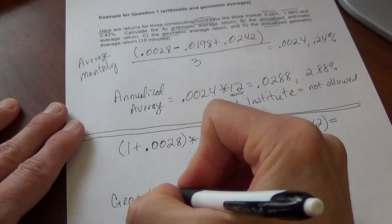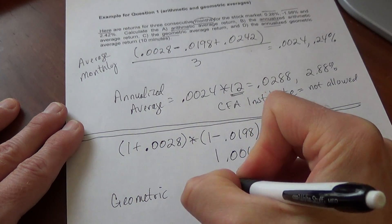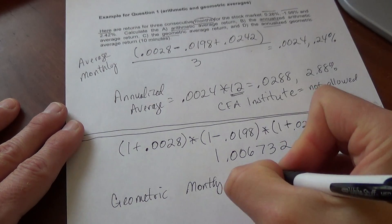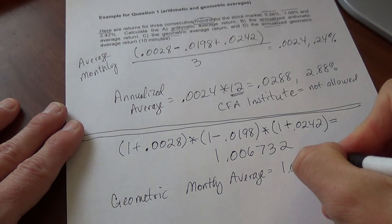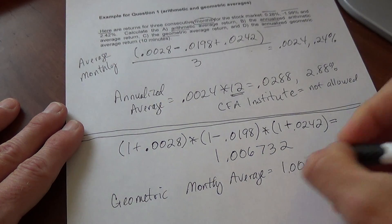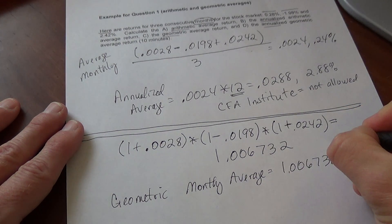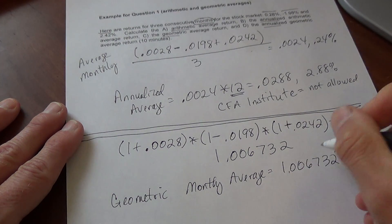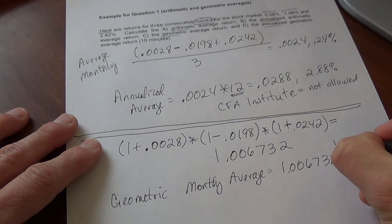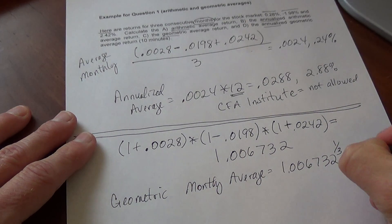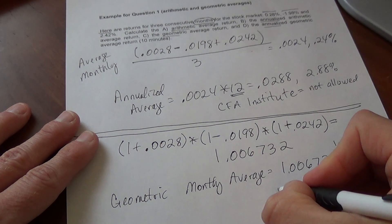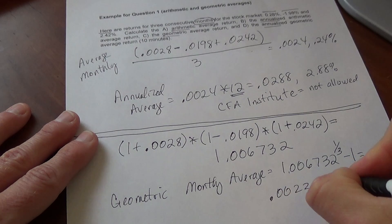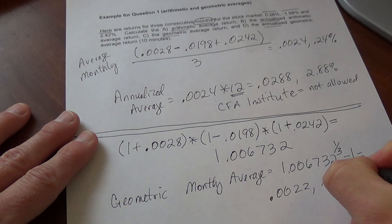So the geometric monthly average is that number, 1.006732, raised to the 1 divided by, well, how many months did we have? We have 3 months, so 1 divided by 3. We subtract 1, and we get a geometric average of 0.0022, or 0.22%.